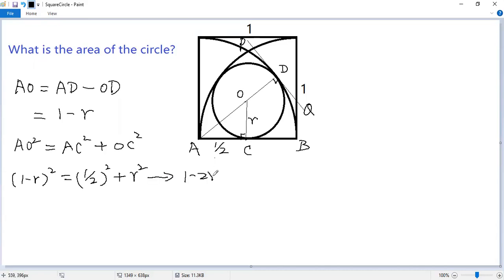Let's expand it. So we get 1 minus 2r plus r squared equals a quarter plus r squared. Both sides subtract r squared. So we get 1 minus 2r equals 1 over 4.